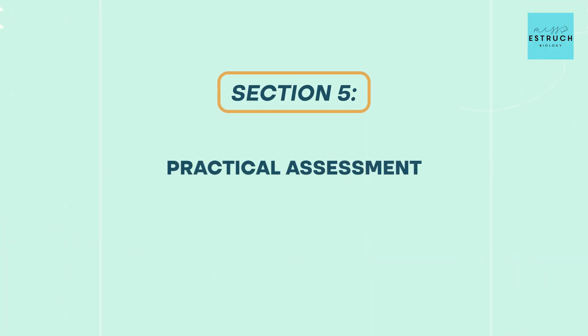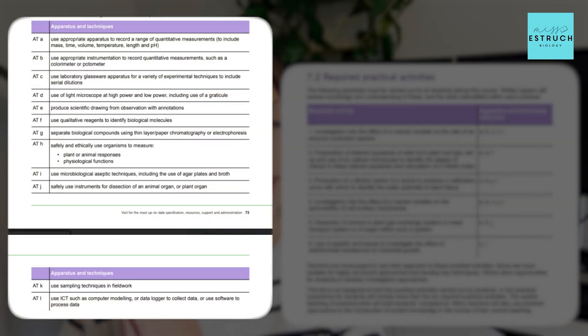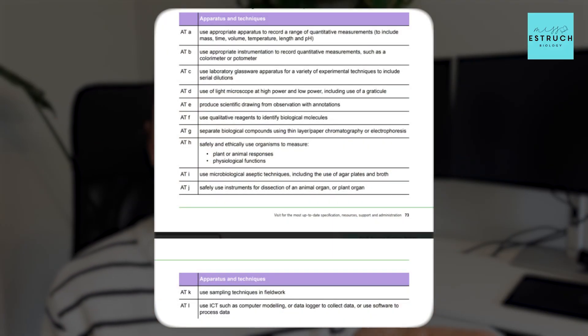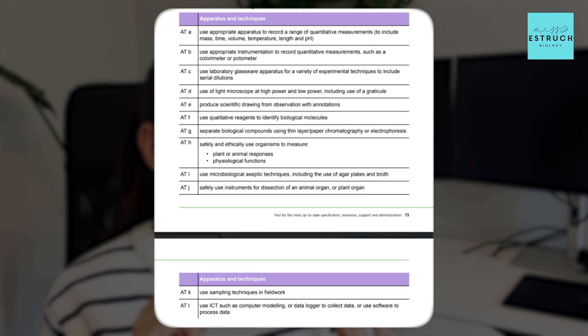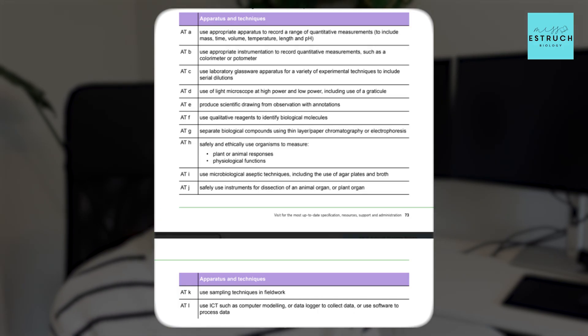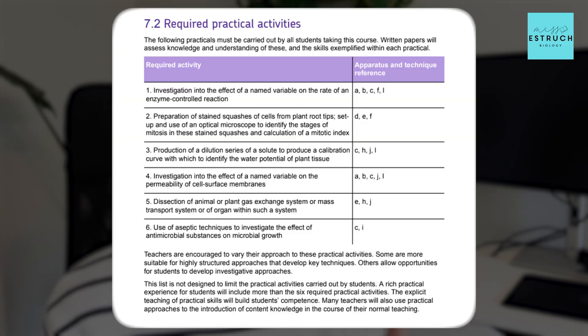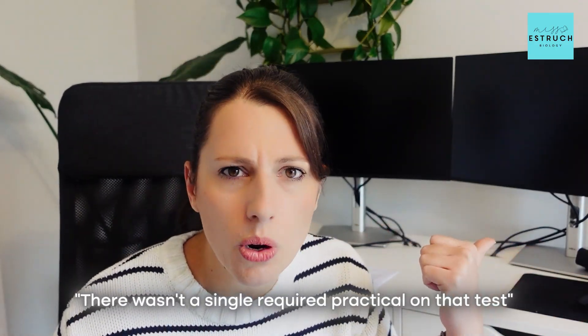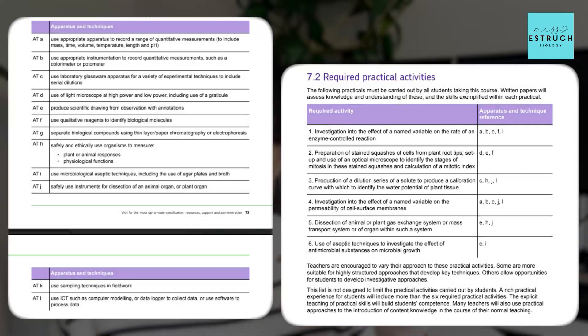The last really important section is the practical assessment section, which has two key essential parts: the apparatus and techniques table and the required practicals table. The apparatus and techniques table is actually more important. It lists the apparatus and techniques — things like colorimeter, how to calibrate an optical microscope, photometry — all the things that aren't explicitly in the required practicals but frequently get assessed. Students often come out of exams thinking there wasn't a single required practical on the test, but that's because they assess apparatus and techniques from this first table that link to those required practicals.